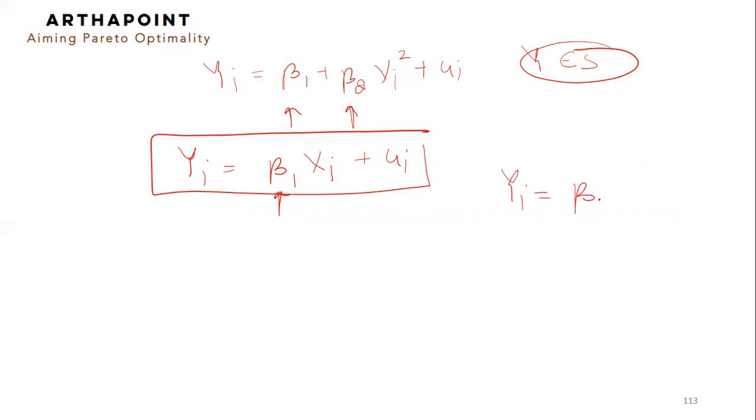Or for your understanding purpose, keep this as beta 2 only, but there is no beta 1. Beta 1 becomes 0.